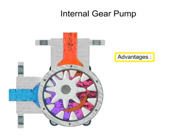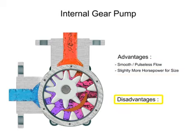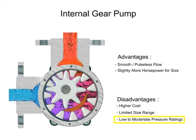Advantages of internal gear pumps include smooth and almost pulseless flow and slightly more horsepower for their size. Disadvantages are higher cost, limited size range, low to moderate pressure ratings, and few sources of manufacture.